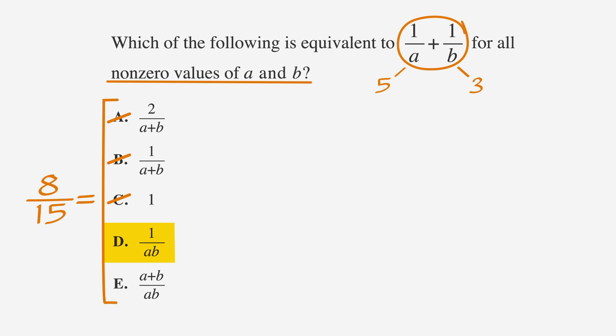Answer choice D, 1 over A times B becomes 1 over 5 times 3, or 1 over 15. This doesn't match our answer. Answer choice E, A plus B over A times B becomes 5 plus 3 over 5 times 3, or 8 over 15. This does match our answer. Answer choice E is correct.